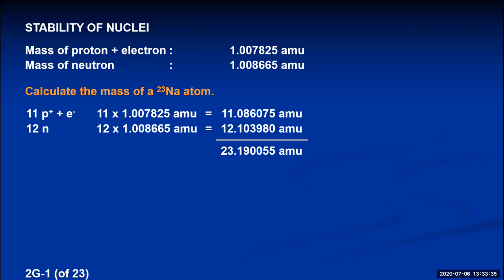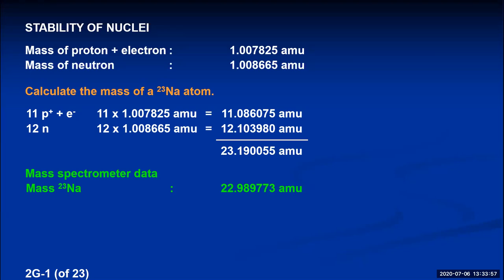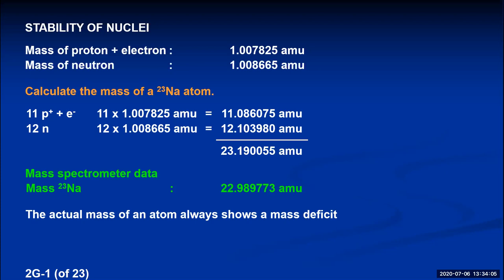If we actually pass sodium atoms through a mass spectrometer, the experimentally determined mass of a sodium-23 atom comes out to 22.989773 AMUs — which is less than the theoretical value. This is true for any atoms passed through a mass spectrometer: experimental masses are always lower than the mass determined theoretically by adding up the individual subatomic particles. The actual mass of an atom always shows a mass deficit when measured experimentally.